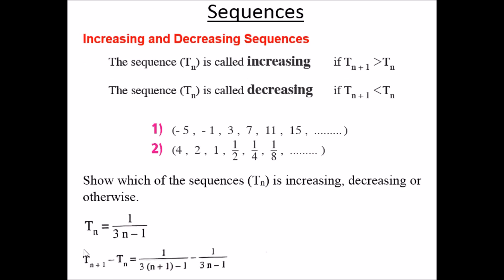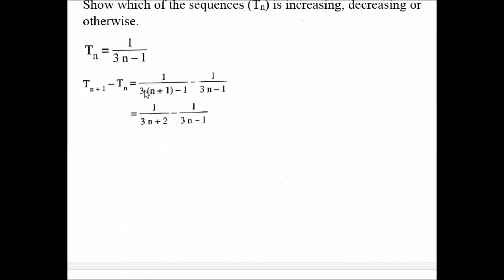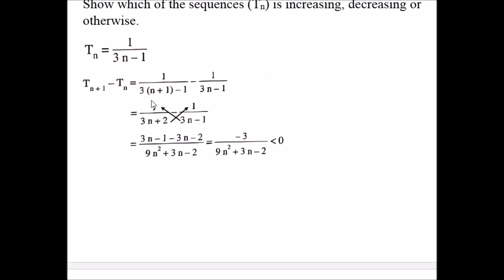To check monotonicity, we examine the difference T(n+1) - T(n). If the difference is positive, each term is greater than the previous one — the sequence is increasing. If negative, the sequence is decreasing. To find T(n+1), put n+1 in place of n in the general term. So T(n+1) = 1 / (3(n+1) - 1) = 1 / (3n+2). Then compute T(n+1) - T(n) by subtracting two fractions.